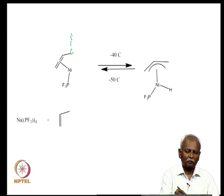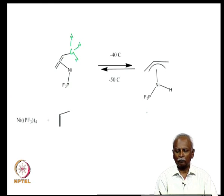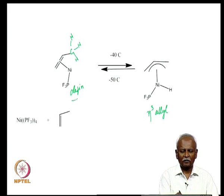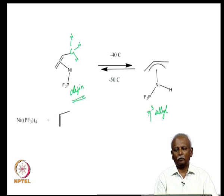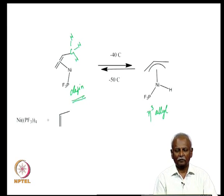One last example of a hydrogen transfer resulting in allyl formation: a methyl group on nickel, where one of these hydrogens can be transferred to the nickel to form an allyl molecule. This molecule is in fact a dynamic system. At temperatures above 40 degrees, you have the formation of an eta 3 allyl complex. If you cool the reaction system, you end up with an olefin complex. This tells you how small the energy barrier is for transferring the hydrogen from the allylic position to the metal.